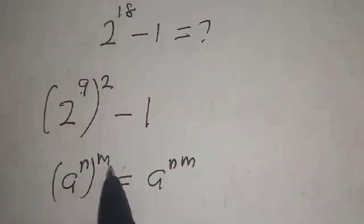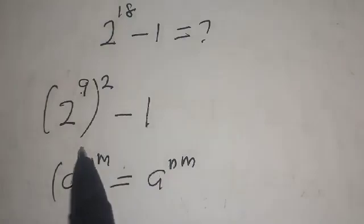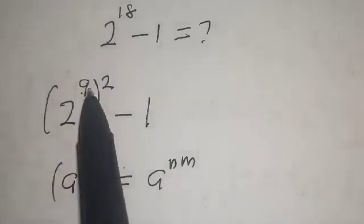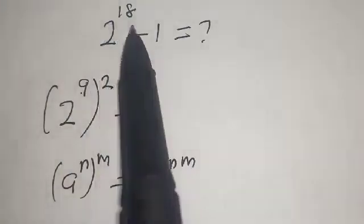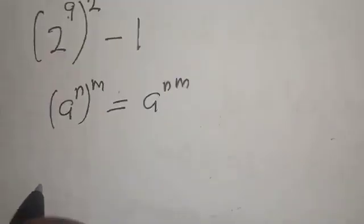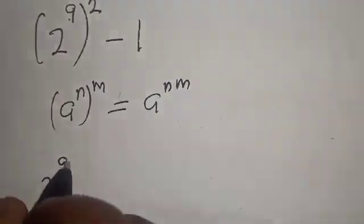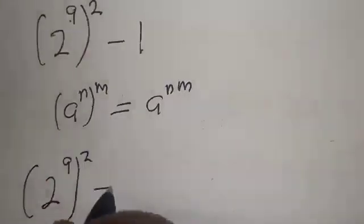a^(nm) is equal to a^n^m. If you multiply 9 times 2, it's going to give you this 18 back. Now (2^9)^2 minus 1...